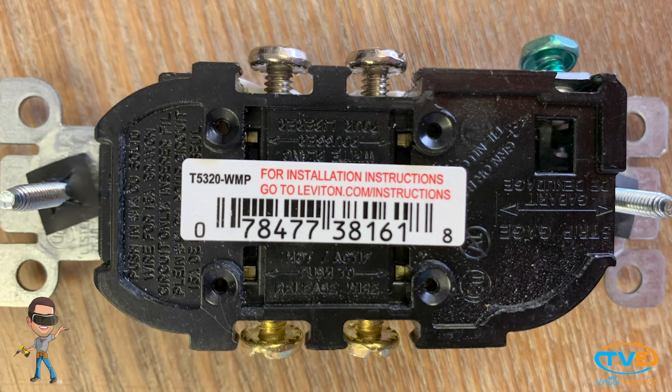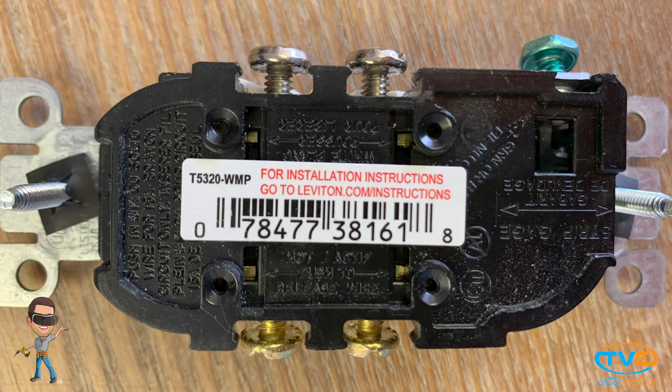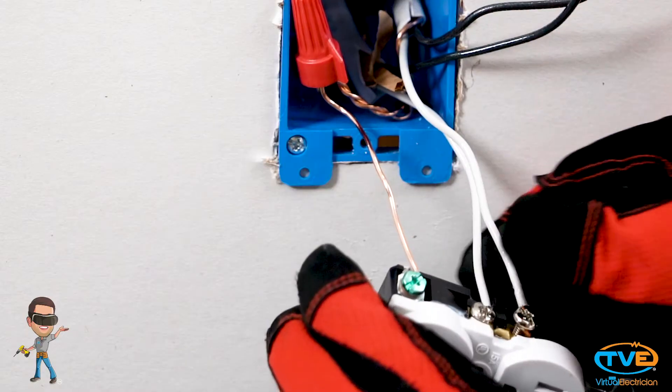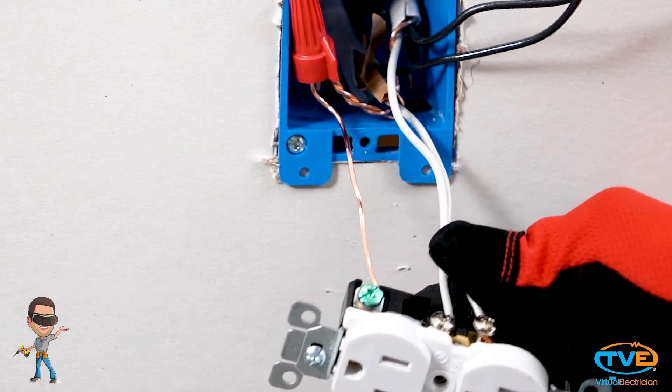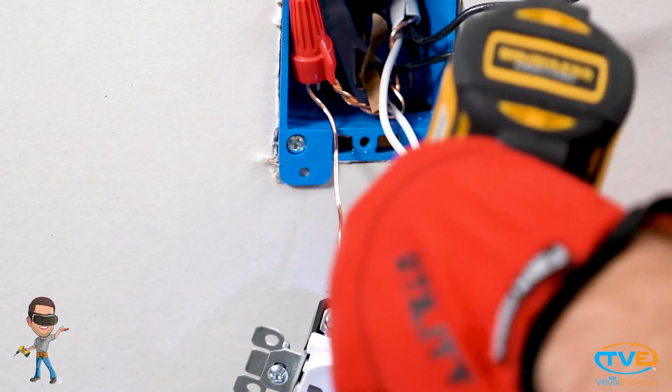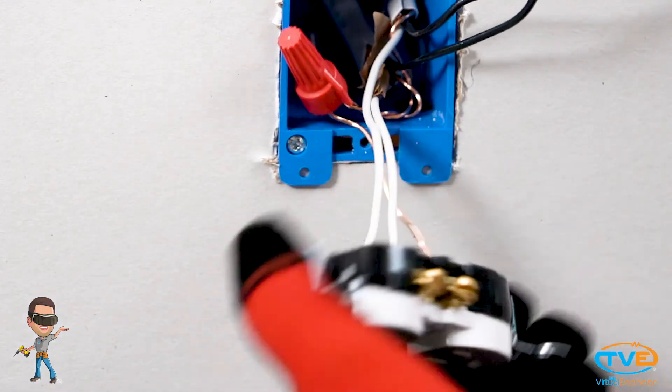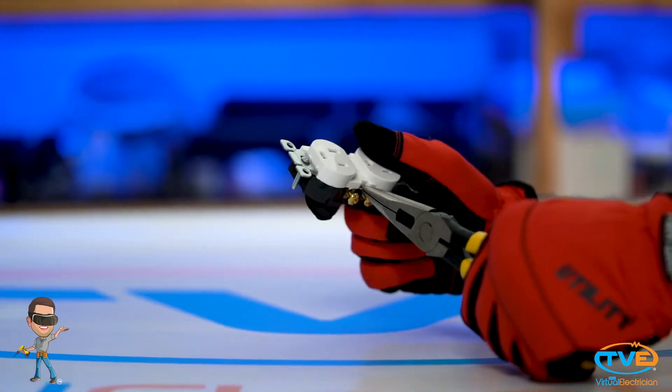And just like switches, there are these holes you can push the wires into if you choose to. Choose not to, please. Over time, these wires can loosen up and it could become a fire hazard. Make sure you make your loop and wrap it around the screw. It doesn't matter which wire goes on which screw because the two screws are linked together by this tab in the middle anyways.